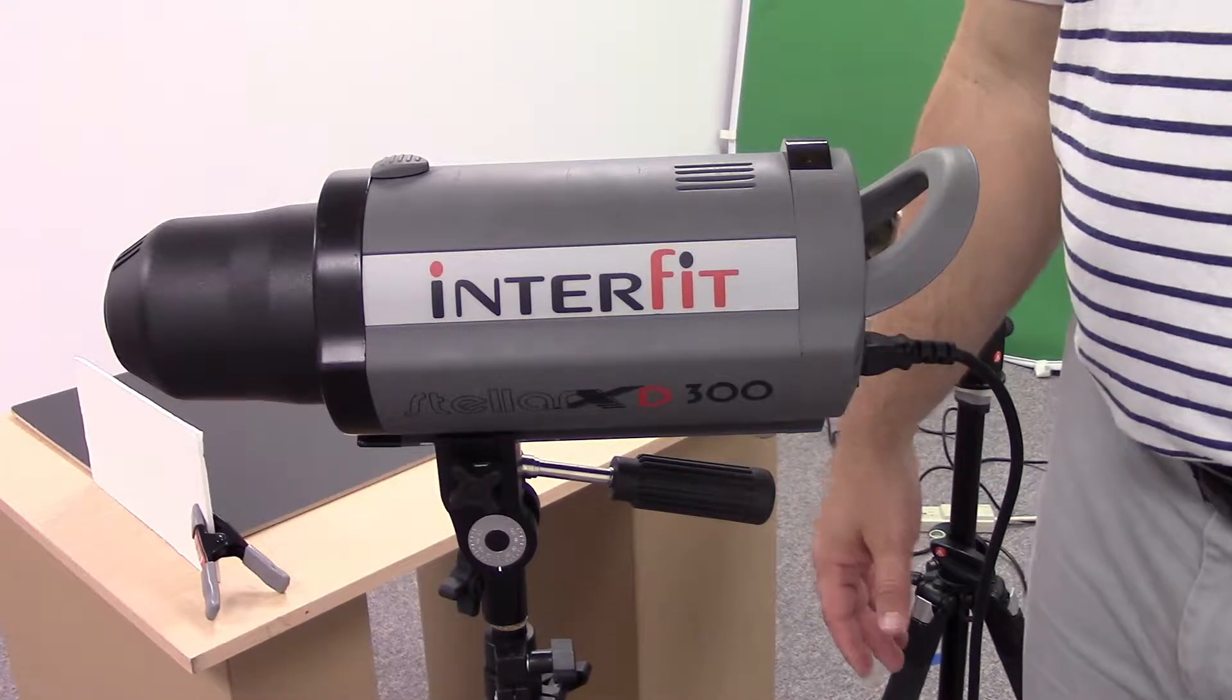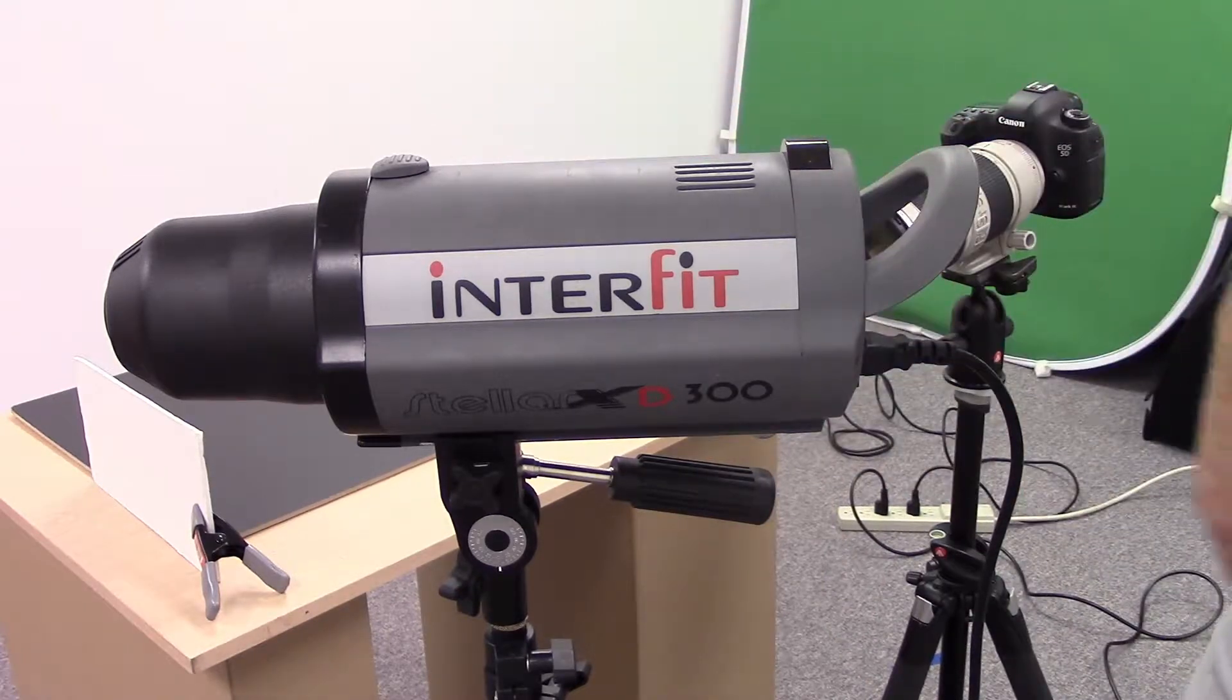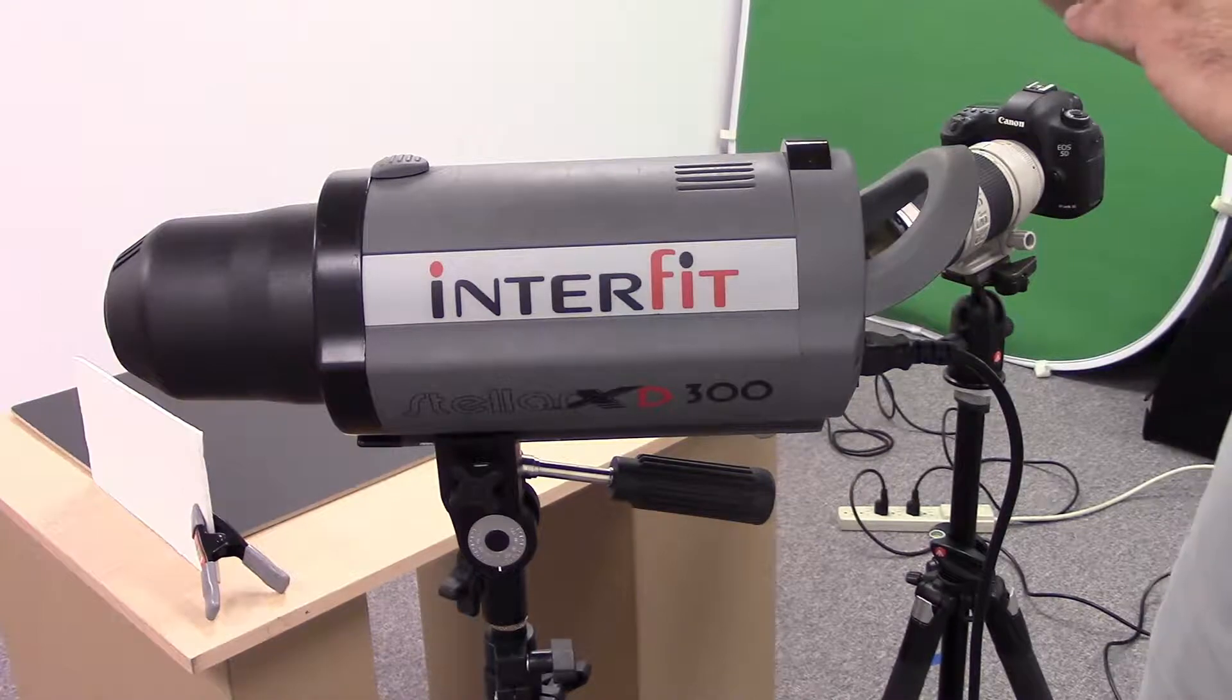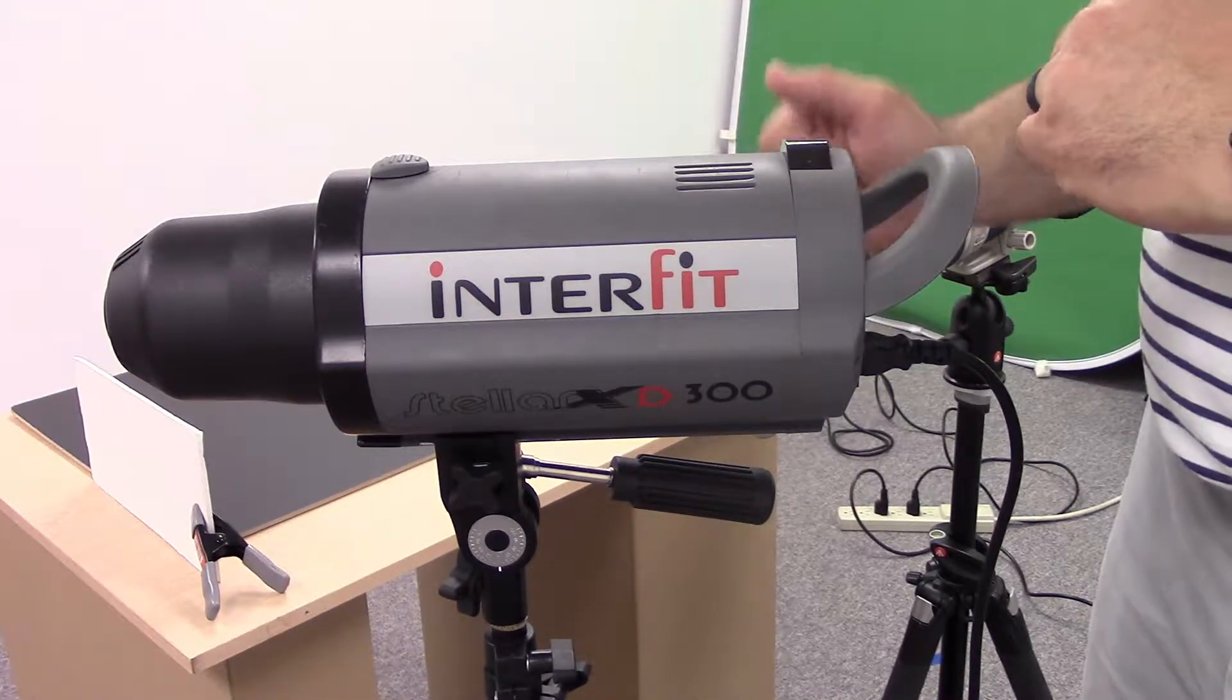Alright, this is the strobe we're going to be using this week. This is an Interfit 300 watt second strobe. It's got a lot of different features on it that we're going to look at. I'm going to show you real quickly.